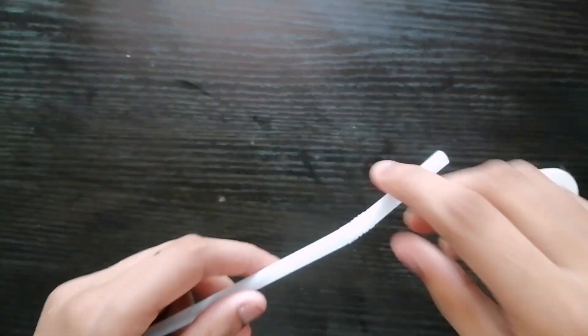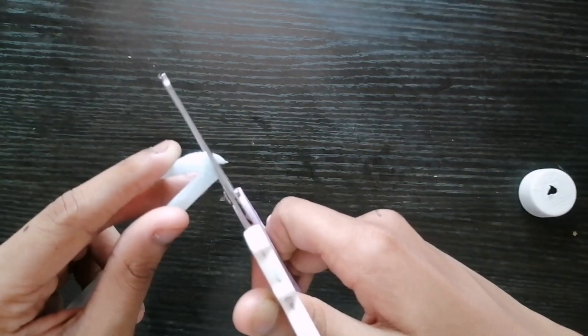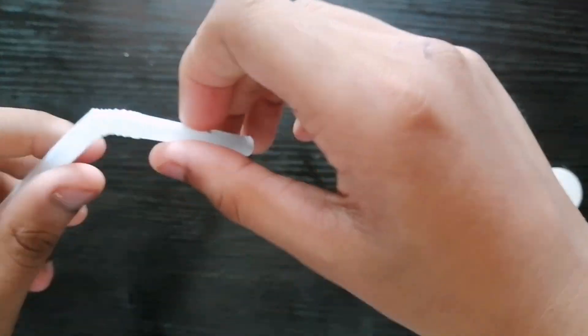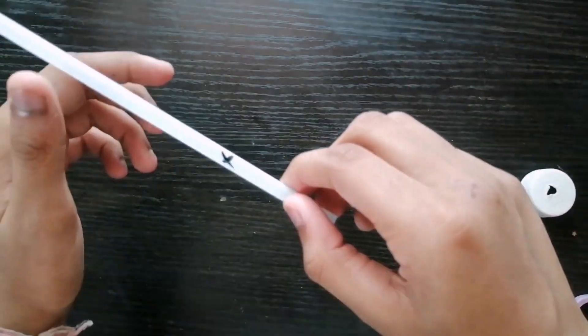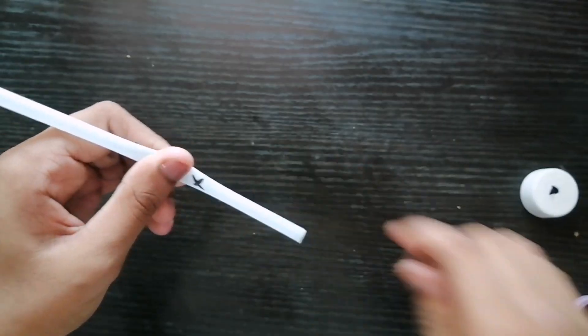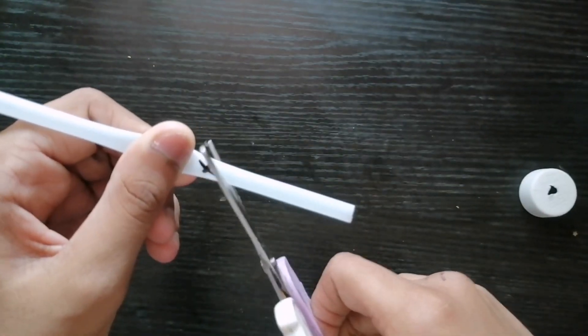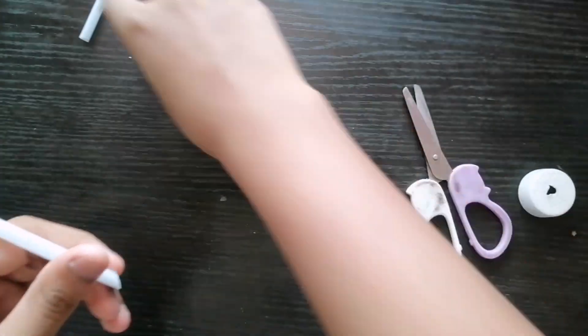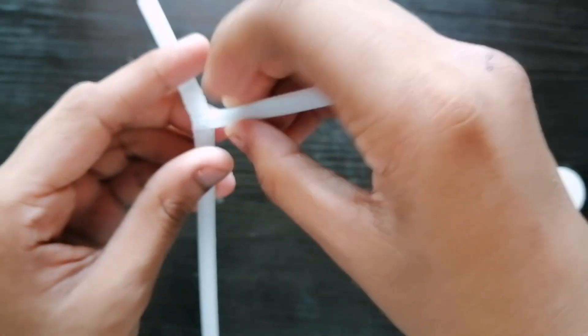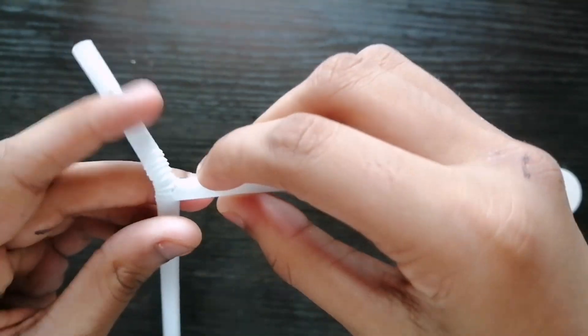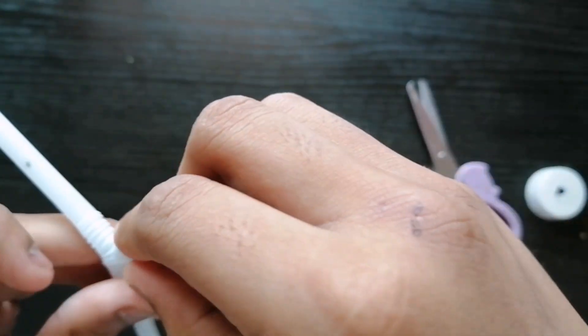Now, take a straw and put a slit as shown here. At the end of the same straw, mark a point about 3-4 cm and cut. Insert a cut part of straw into the slit made on the straw. Secure it with hot glue or cello tape.